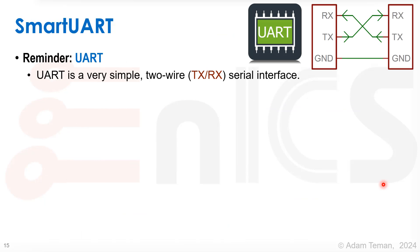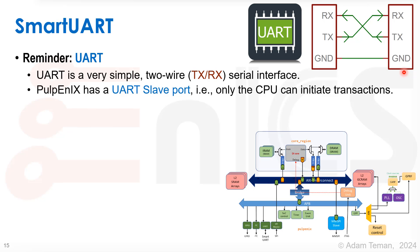What is Smart UART? As a reminder, UART is a very simple two-wire transmit-and-receive serial interface. We have two devices, each transferring to the other — one bit at a time serial. Pulpenix has a UART slave port, and you can see in the diagram that the arrow pointing down means it is a slave on this system.